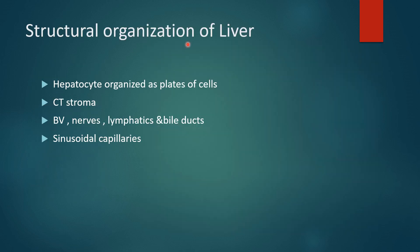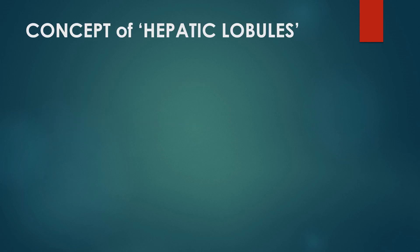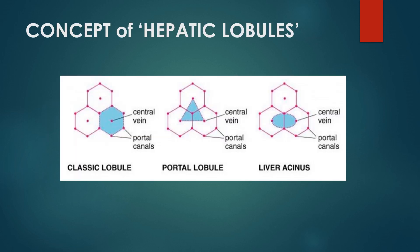Structurally, the liver consists of hepatocytes organized as plates of cells, forming nearly 80% by weight of the liver, plus connective tissue stroma, blood vessels, nerves, lymphatics, bile ducts, and sinusoidal capillaries. There are three different ways to understand the structural organization of the liver: first is the classic lobule, second is the portal lobule, and third is the liver acinus or acinus of Rappaport.